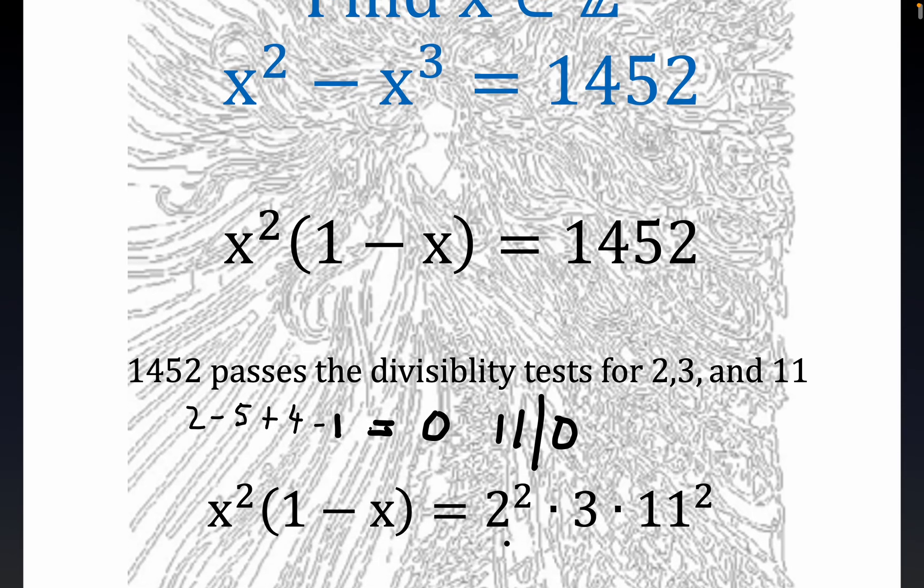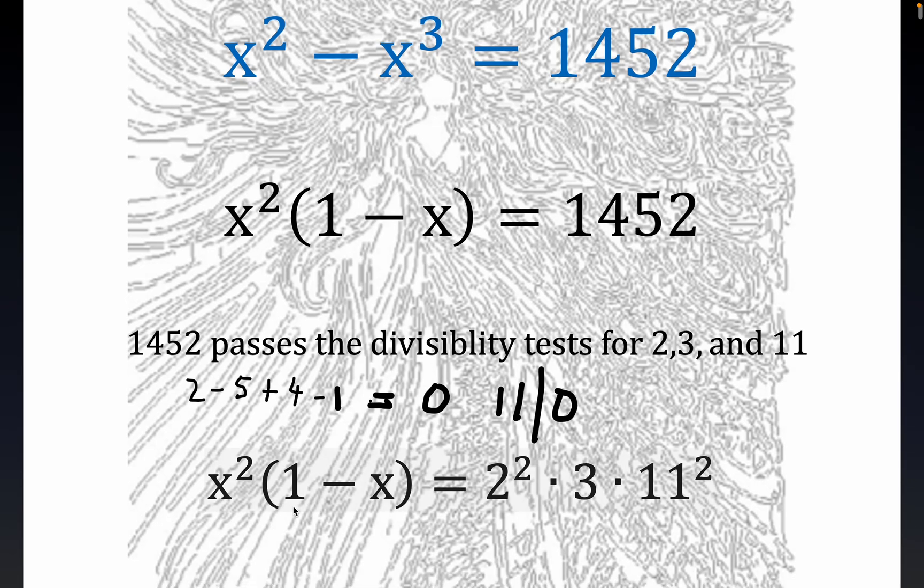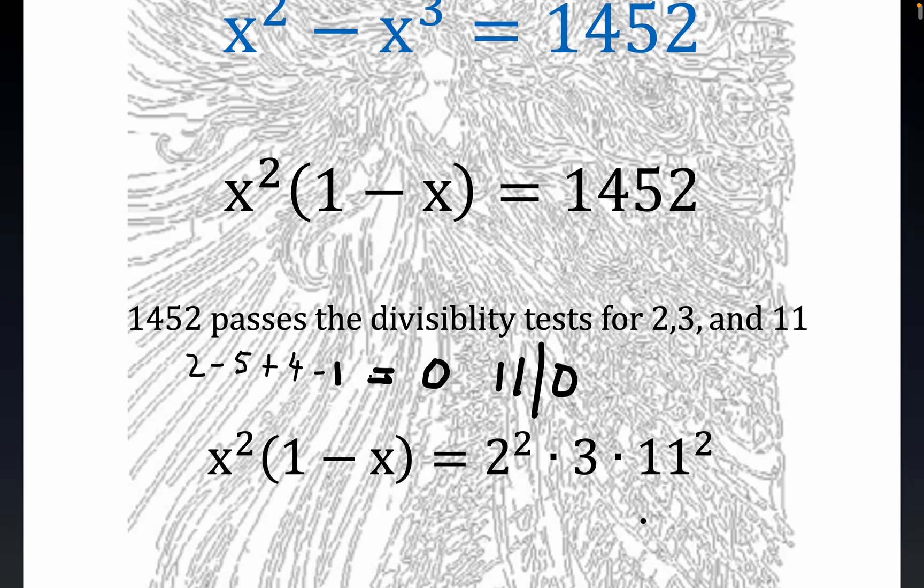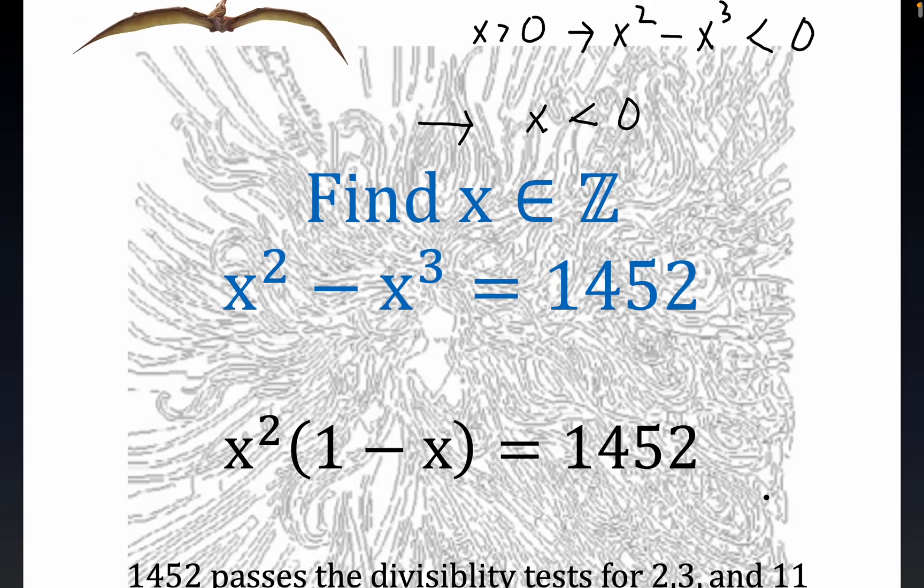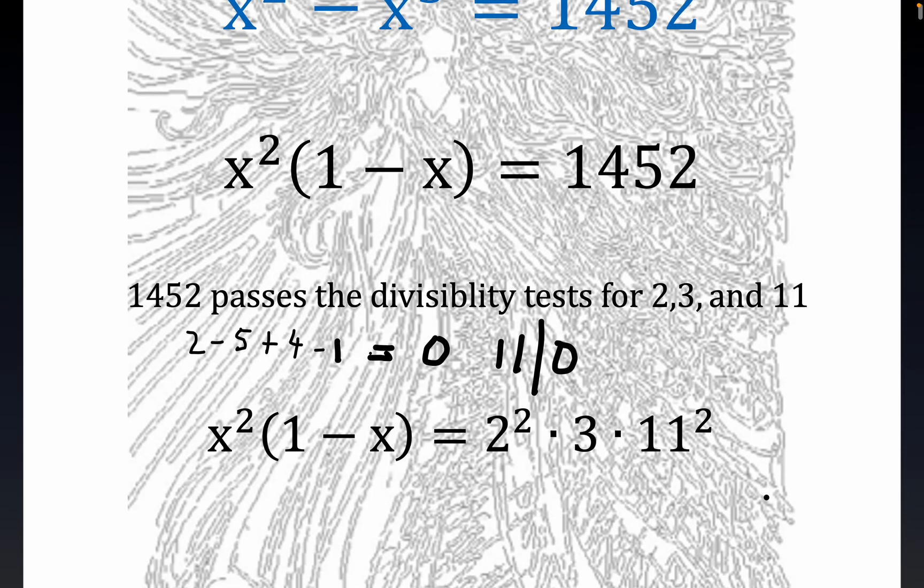So what we have is this right here, folks. We have x squared times 1 minus x is equal to 2 squared times 3 times 11 squared. And again, this is not hard to figure out once you know these are the only three divisors doing the divisibility tests. Now we also know, we learned at the beginning that x has to be less than 0. So that gives us some information.